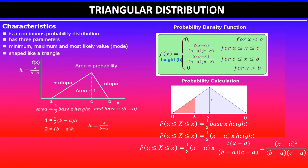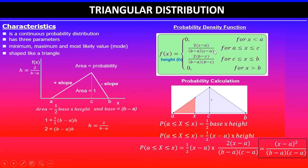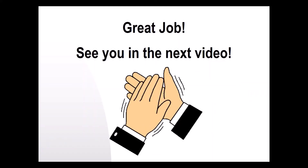You don't need to use the simplified formula directly. As long as you know half the base times height: the base is x − a, and for the height just substitute the given values into the appropriate PDF formula, then compute half the base times height to get the probability. Thanks for watching, I'll see you in the next video.